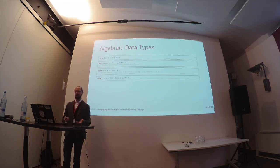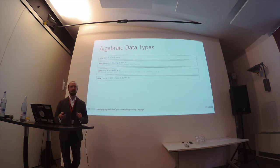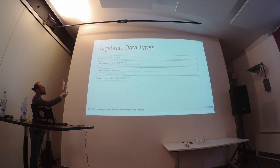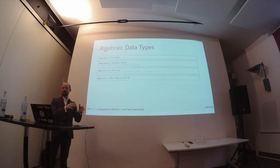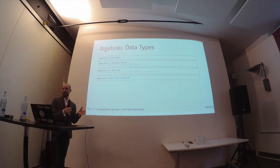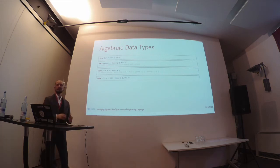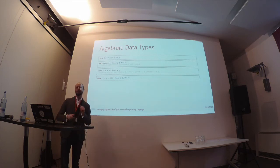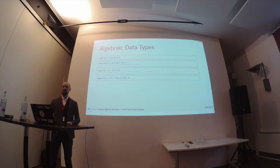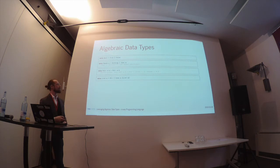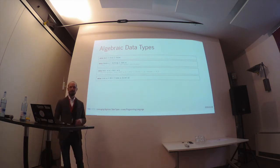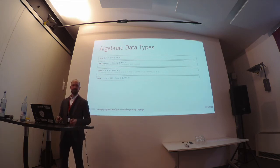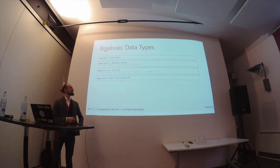Why are these data types called algebraic? In algebra, you can add and multiply. Looking at bool — true or false — you have plus: one option for true and one for false. For maybe, you have one value for nothing plus all the values of A. For a pair, you have multiplication: all values of A times all values of B — the Cartesian product. And for lists, you combine both addition and multiplication. That's why they're called algebraic.